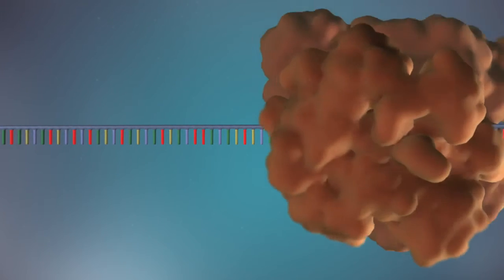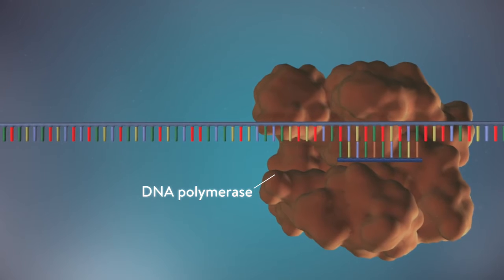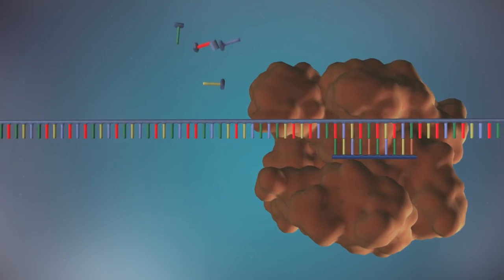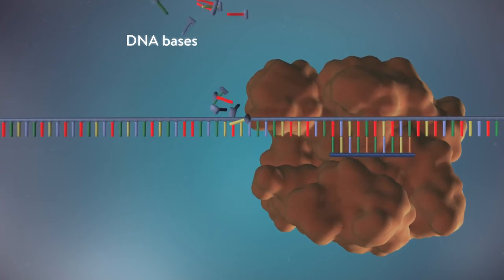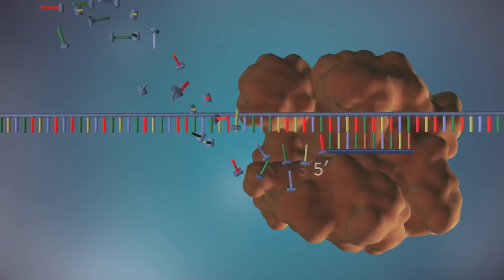An enzyme called DNA polymerase binds to the primer and will make the new strand of DNA. DNA polymerase can only add DNA bases in one direction, from the 5' end to the 3' end.